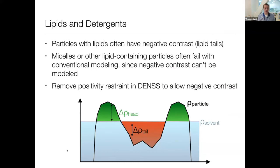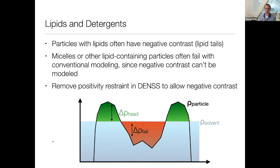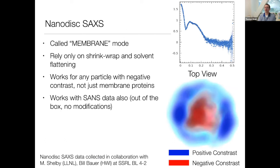DENSS can also handle membrane proteins and micelles that have negative contrast, where the interior of the micelle is made of lipid or detergent tails with less electron density than even the solvent, resulting in negative contrast inside the envelope. Most programs can't model this, but DENSS can with its 'membrane mode' option that allows negative contrast. Here's an example of a nanodisc — bead modeling programs struggle with this since there's no concept of a negative bead, whereas DENSS handles it naturally by producing negative density.